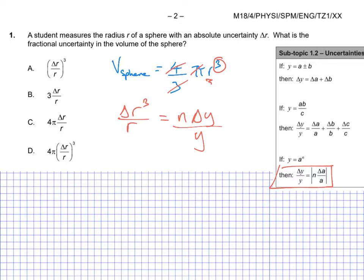So what we've shown is, well, actually we can put it like that. And that means that the n is going to be, this n value is our 3. So we can show that it's actually 3 delta r over r. That's the fractional uncertainty of the volume of a sphere. So the answer must be B.